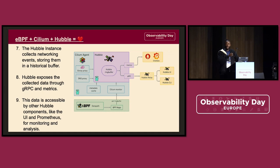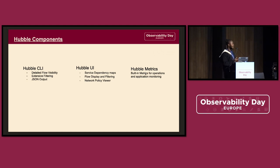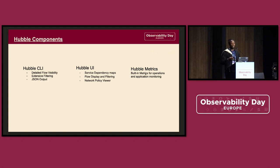This is the point where you can export those metrics to the Hubble UI or to Prometheus and Grafana. Hubble has a bunch of components — throughout the talk I've been mentioning the Hubble UI, Hubble Metrics, and Hubble CLI. The Hubble CLI gives you detailed flow visibility in your terminal by just running the command 'hubble observe'. It also allows you to do extensive filtering — you can filter based on network traffic for certain pods in a namespace, based on certain labels, or based on certain criteria.